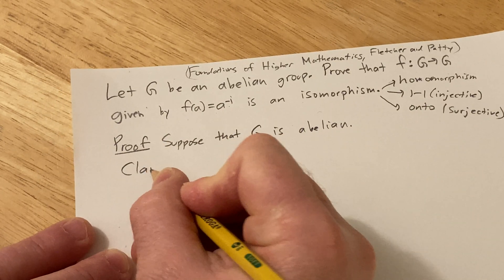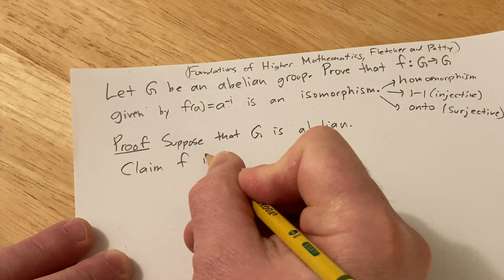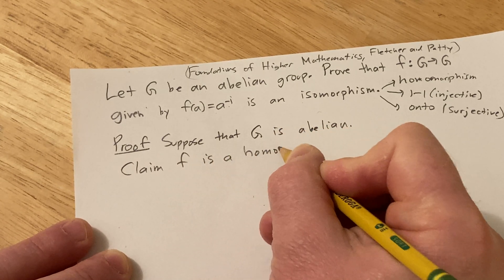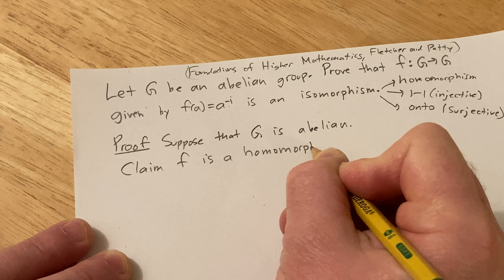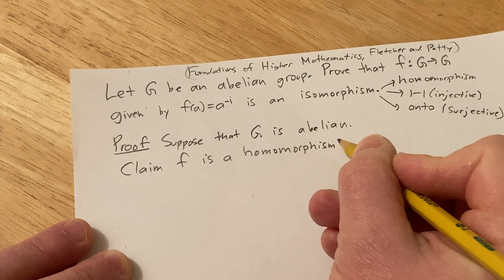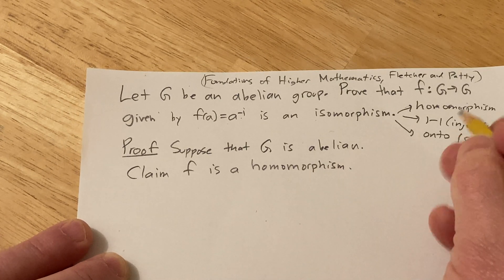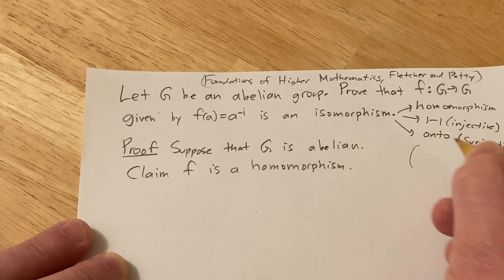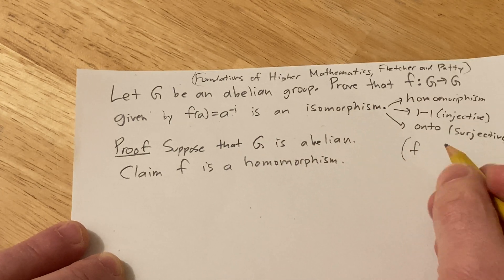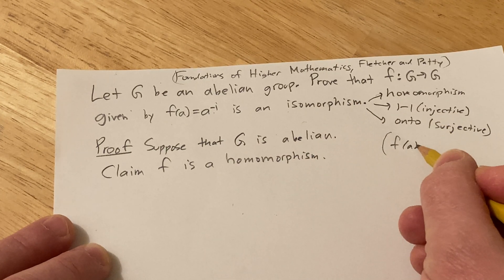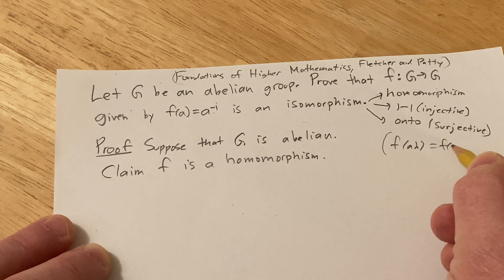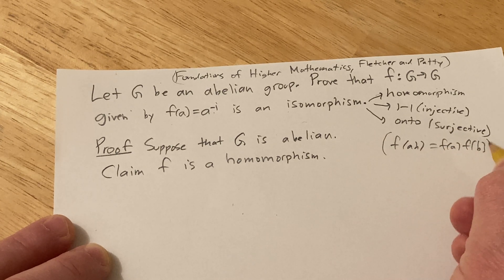So claim: f is a homomorphism. So to show it's a homomorphism we basically have to show that for all a, b in G we have f(ab) equal to f(a) times f(b). That's what we have to show.